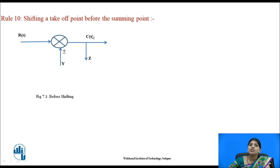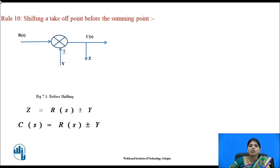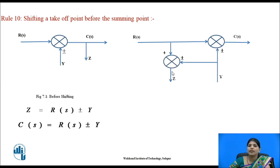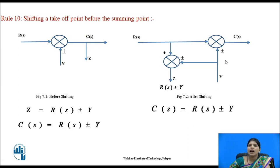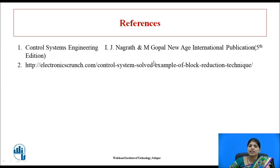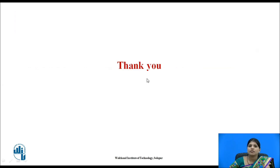Rule ten: shifting a takeoff point before the summing point. Before shifting, Z = R(s) ± Y and C(s) = R(s) ± Y. After shifting, one more summing point is added where Y is again added, giving Z = R(s) ± Y and C(s) = R(s) ± Y — the same outputs are maintained. These are the references. Thank you.